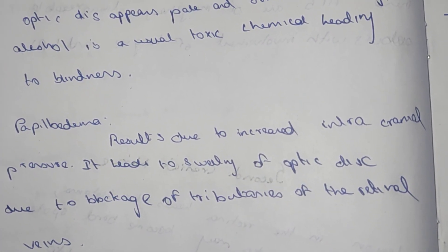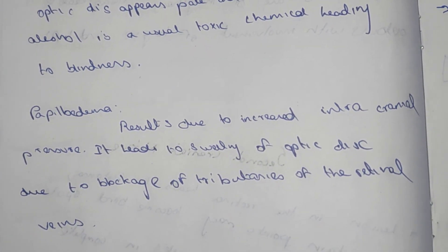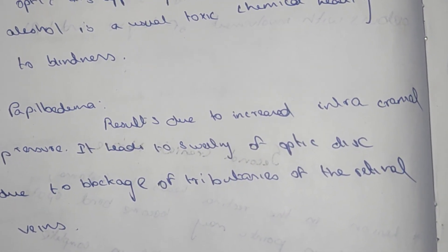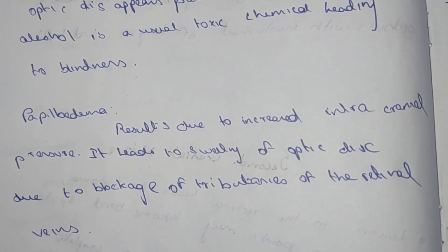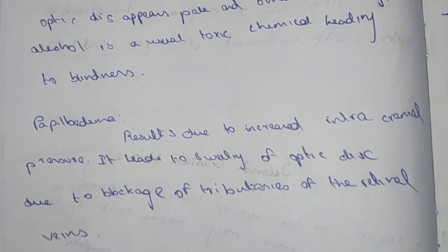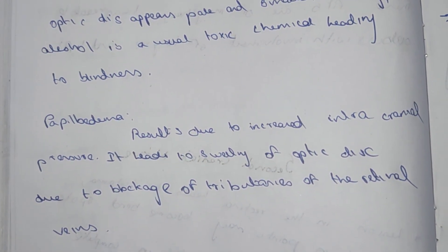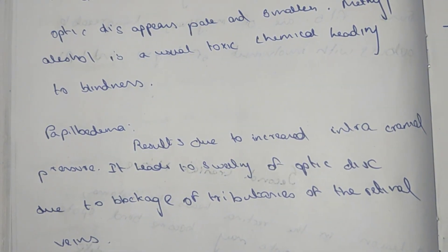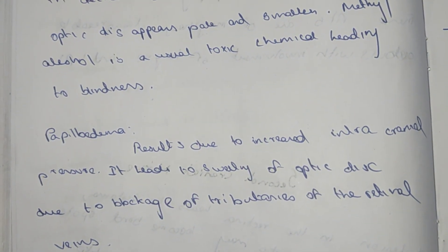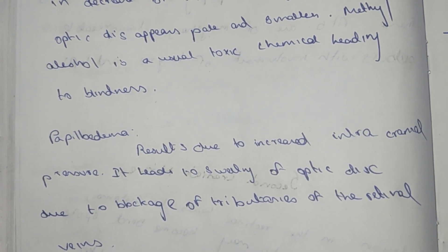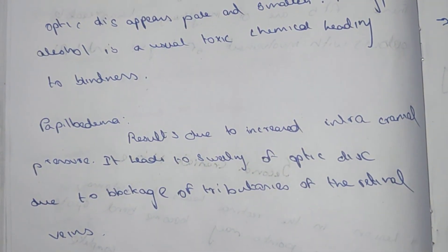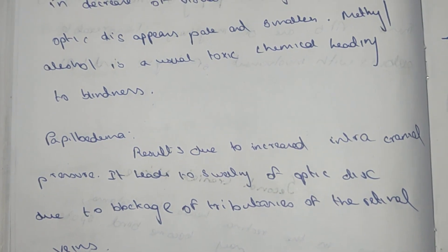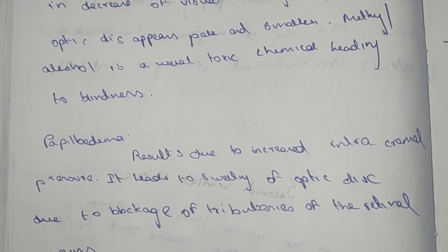Papilledema results from increased intracranial pressure, which leads to swelling of the optic disc. Due to this there will be blockage of the tributaries of the retinal veins. That covers the applied anatomy of the second cranial nerve.